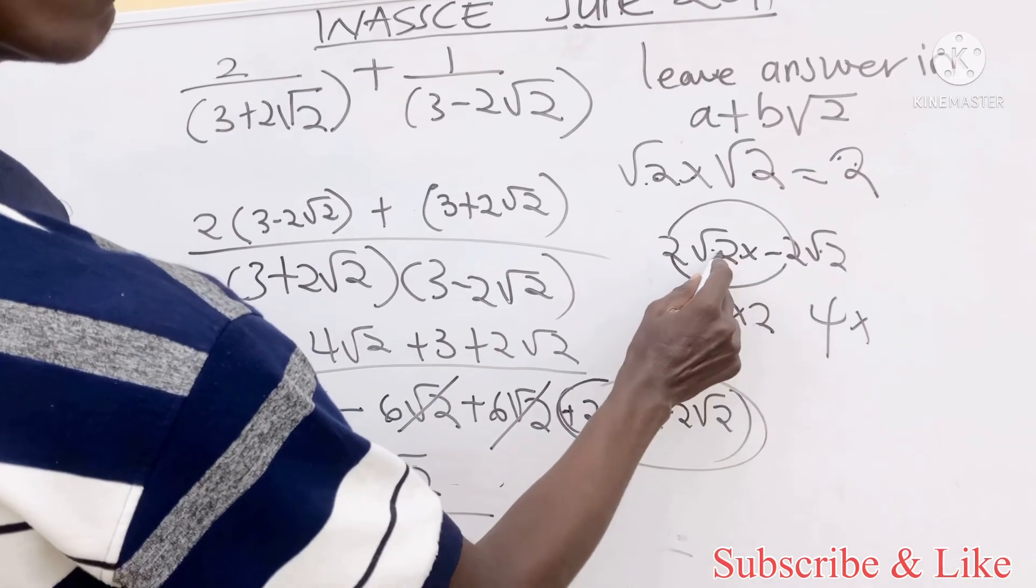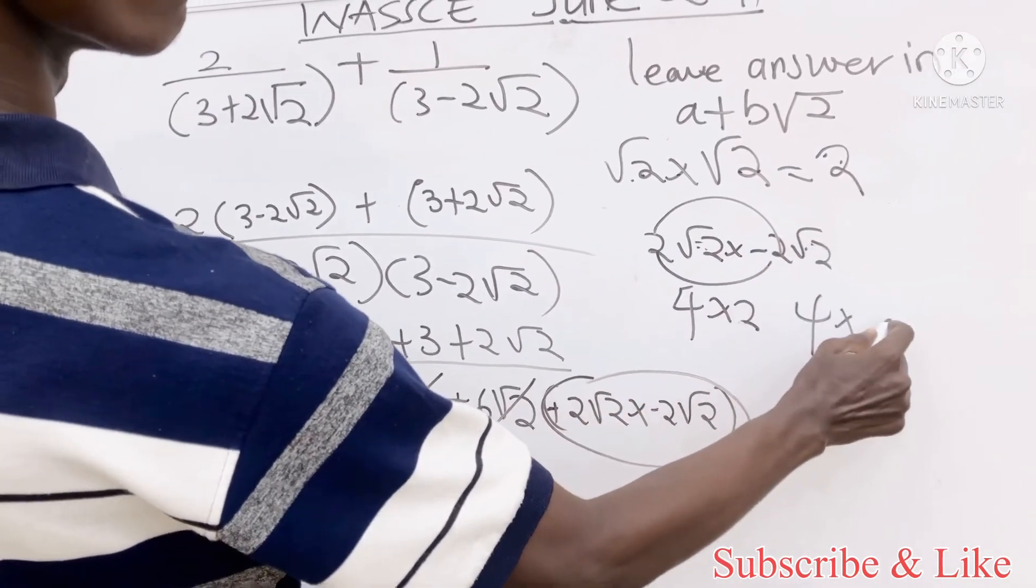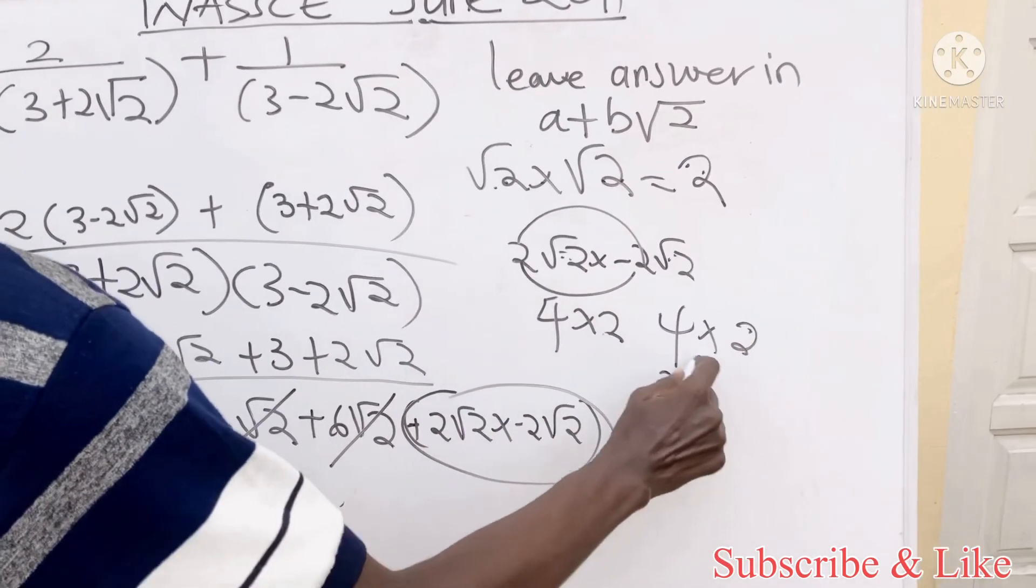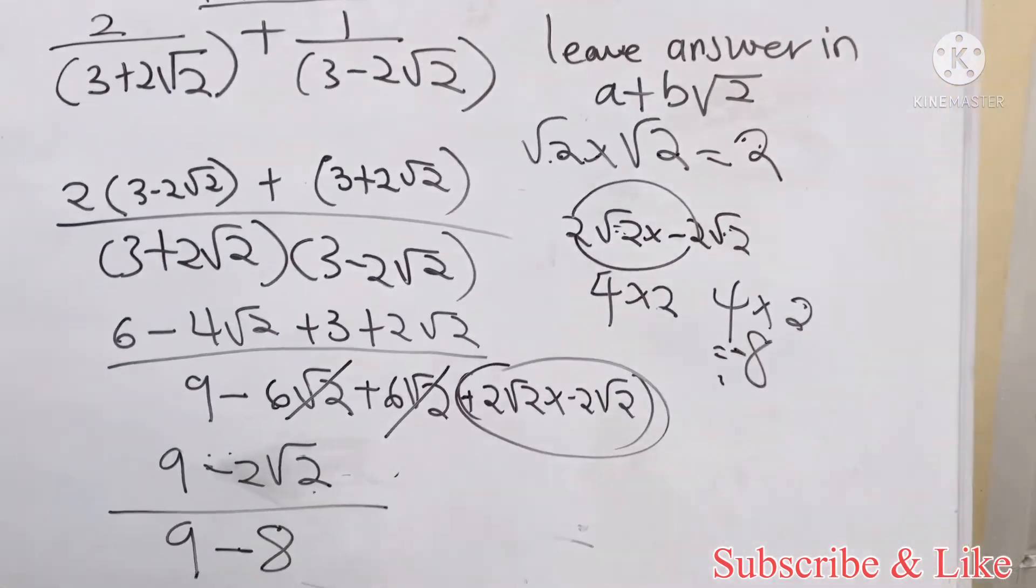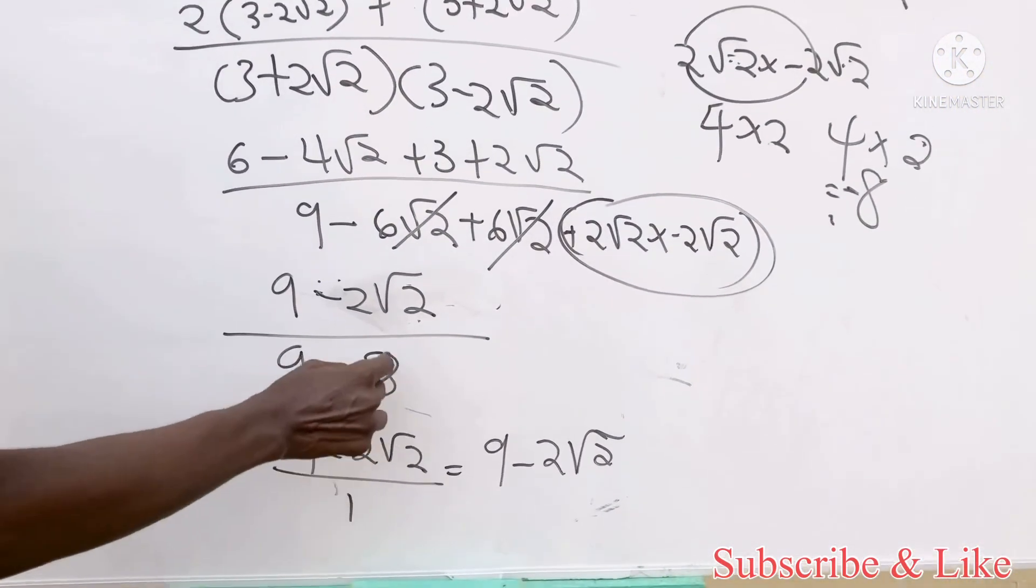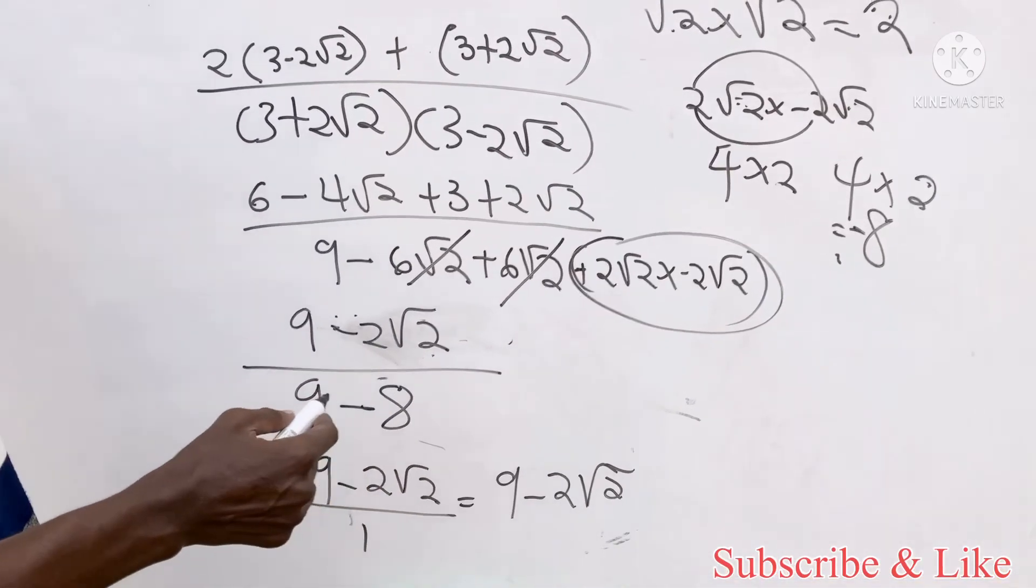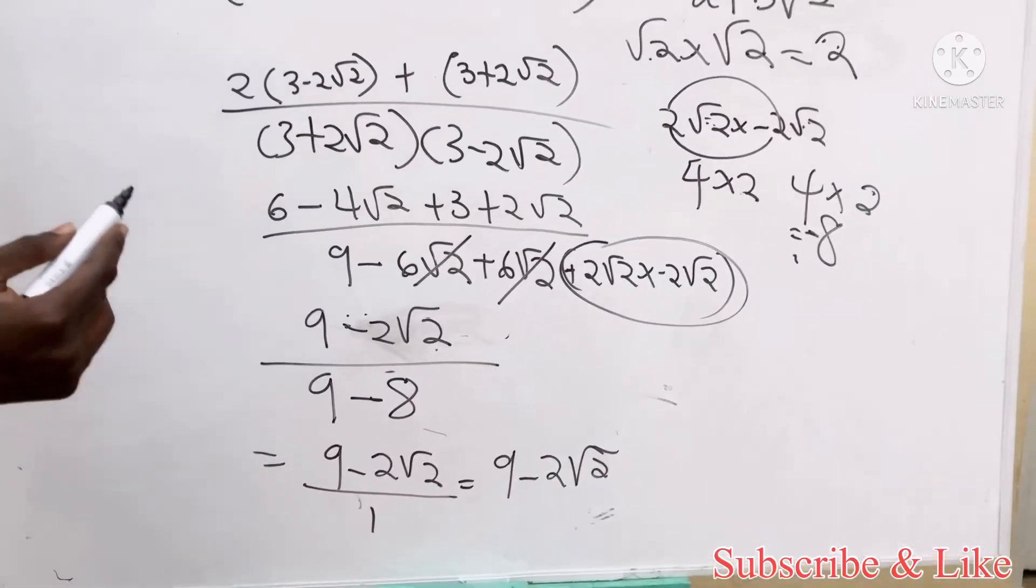That's the reason why we had here two to be eight, because two multiply two giving us four, then root two times root two is two, giving us eight as a minus. So minus eight, this gives us here to be minus eight.